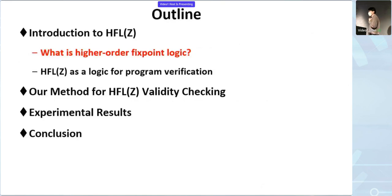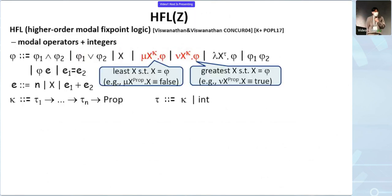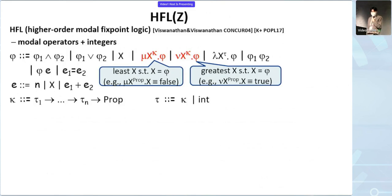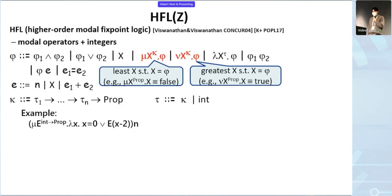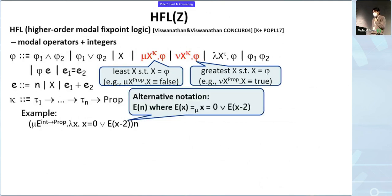Here is the outline of this talk. First, let me introduce higher-order fixed-point logic. HFG comes from higher-order modal fixed-point logic, called HFL, with integer arithmetic added and modal operators omitted. Here is the syntax of formulas: in addition to ordinary logical connectives, we have least and greatest fixed-point formulas, lambda abstractions and applications to manipulate higher-order predicates, and some primitives for integer arithmetic. Here is an example of an HFG formula, which I sometimes express using an alternative notation based on fixed-point equations.